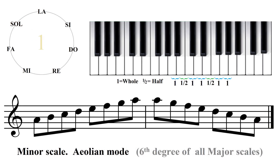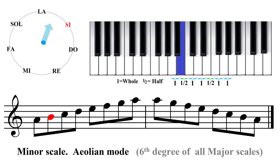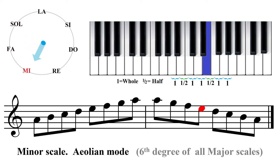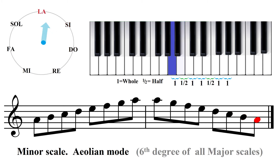Moving up to the sixth degree of the major scale, we have natural minor and the Aeolian mode, starting on La. La, Si, Do, Re, Mi, Fa, Sol, La. Sol, Fa, Mi, Re, Do, Si, La.